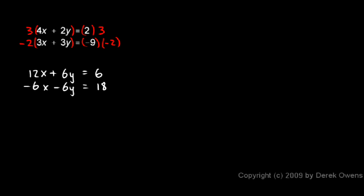Now you might be able to see why I chose these numbers, 3 and negative 2. I looked at these values right here, the 2y and the 3y, and I realized that multiplying the 2y by 3 would give me 6y, and multiplying the 3y by negative 2 would give me negative 6y.